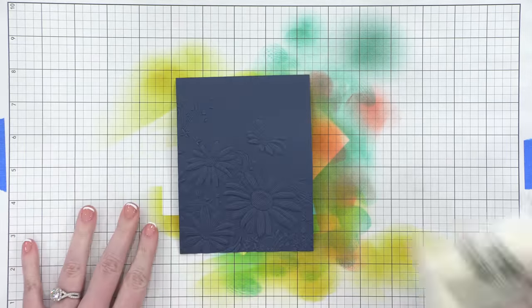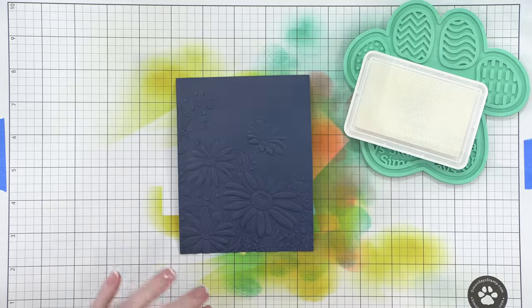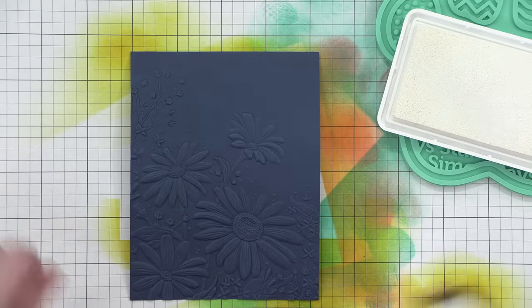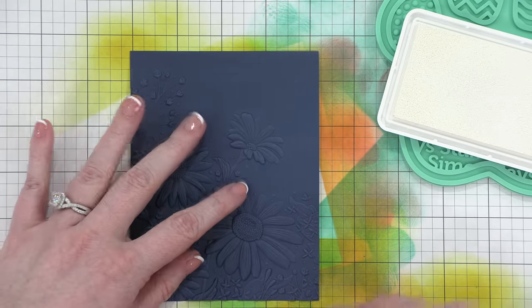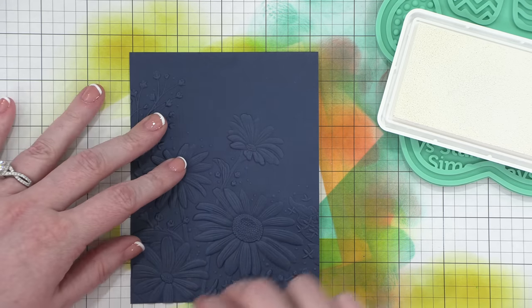So something you can do to really emphasize the texture and embossing on your cardstock is to take a pigment ink or any other ink and very lightly blend on top. I'm using some white pigment ink from Simon, a very small amount.